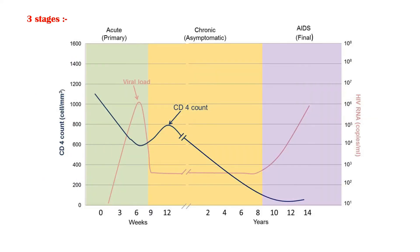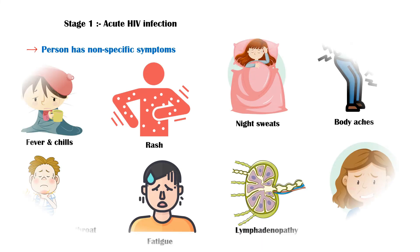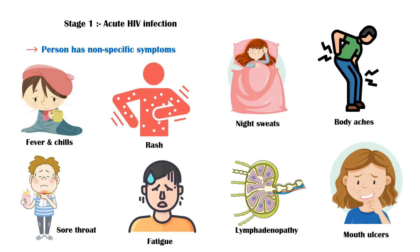HIV infection is a progressive disease that can be categorized into three stages. During the first stage, acute HIV infection, a person has non-specific symptoms including fever and chills, rash, night sweats, body aches, sore throat, fatigue, lymphadenopathy, and mouth ulcers. However, a person can be completely asymptomatic during the acute phase, and having these symptoms does not indicate HIV infection, since even a mild flu can give rise to these symptoms.